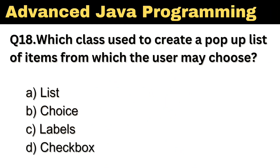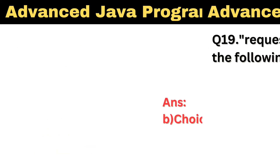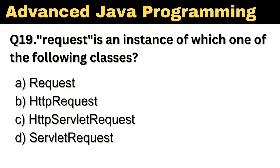Question number 18: Which class is used to create a pop-up list of items from which the user may choose? The right answer is Option B: Choice.